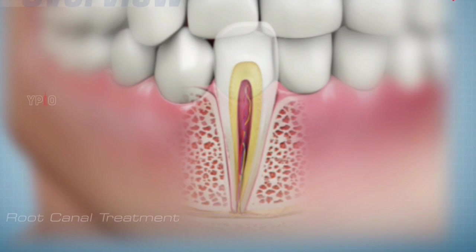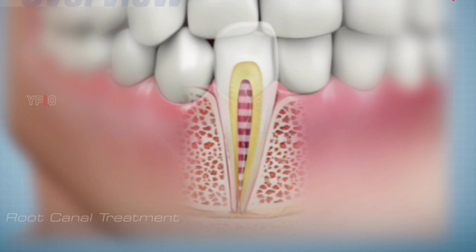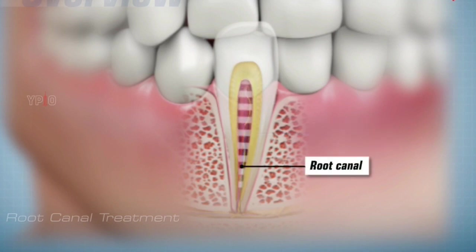In the crown, the pulp is present within a chamber called the pulp chamber, and it travels down the length of the root to the tip or apex, called the root canal.